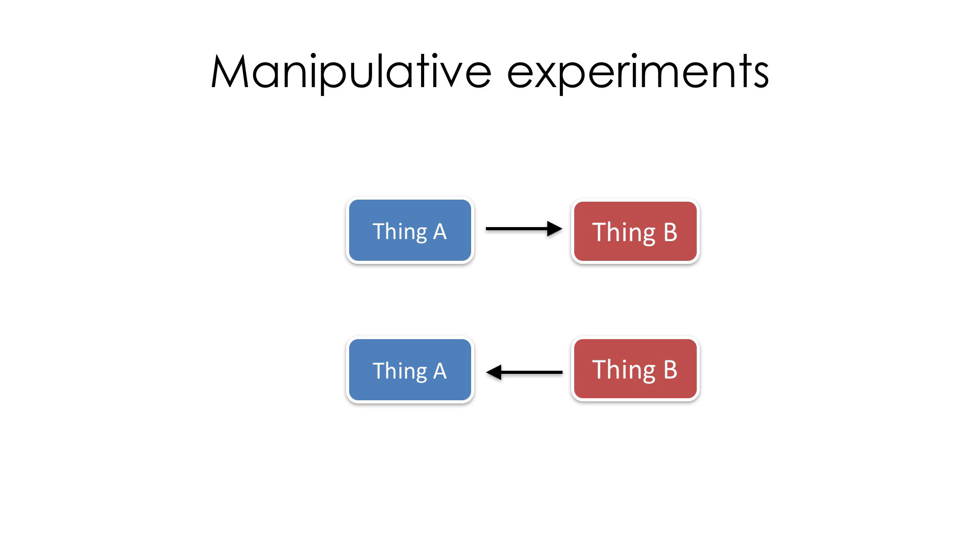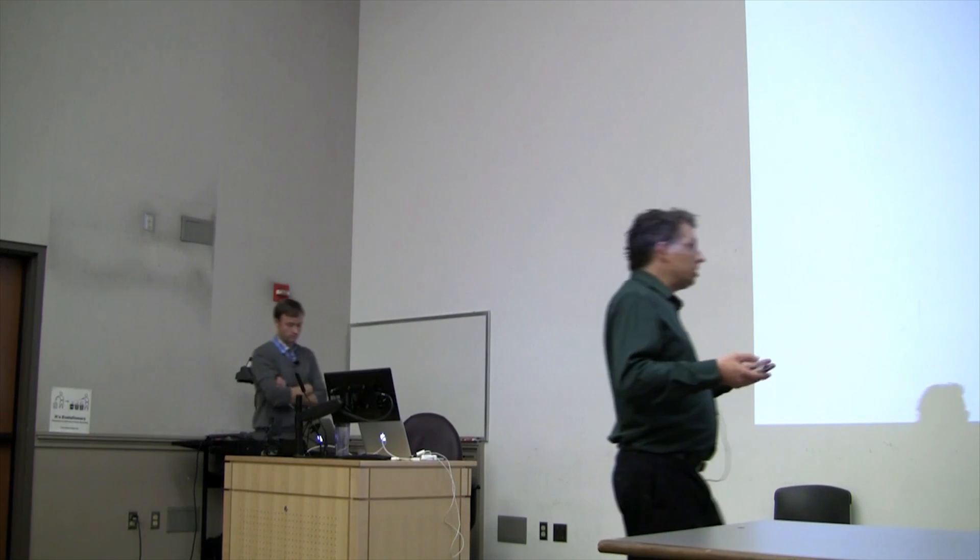If we actually have direct causality, then we see something different. We change thing A, we perturb thing A, we see a change in thing B. If the causality goes in the other direction, we perturb B, we see a change in A, right? So that's helping us get at these underlying causal questions.